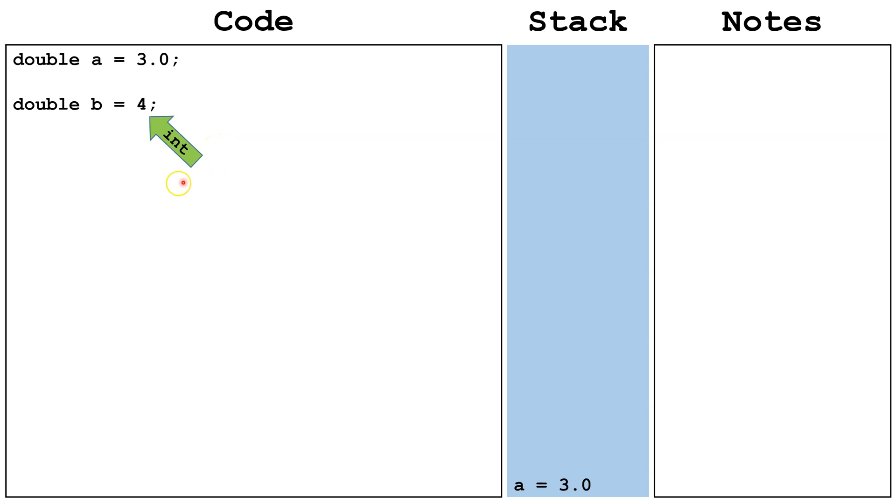Next, we'll notice that here we're setting double b equal to 4. The 4 is an int, and the b is a double. This is what we call widening, because 4 needs to be widened to 4.0, adding precision. This can happen automatically, so that when we place it on the stack, it automatically converts it to 4.0.